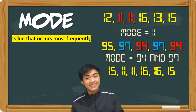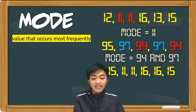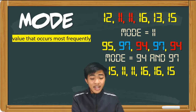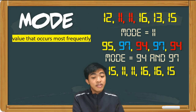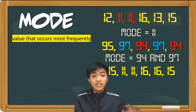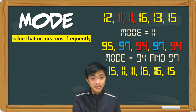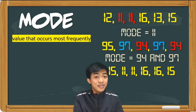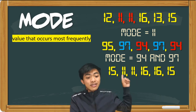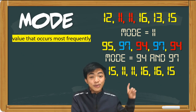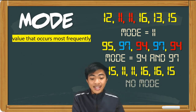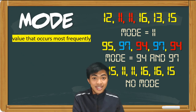And last dataset, we have here 15, 11, 11, 16, 16, and 15. So actually, all of them appeared twice — 15 appeared twice, 11 appeared twice, 16 appeared twice as well. So what do you think, guys? Are 15, 11, and 16 the modes of this dataset? Well, actually, no. Kasi ang mode, yun yung value na mas marami. At dito sa third dataset natin, walang value na mas marami. So this dataset has no mode simply because walang mas marami kasi lahat sila tigdadalawa.